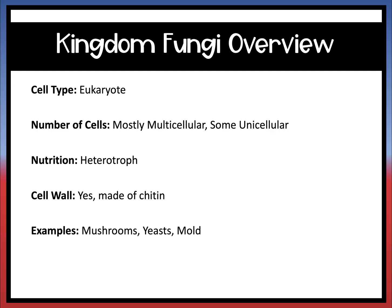For the fungus kingdom, the cell type is eukaryote, which means it has a nucleus. Most fungi are multicellular. There are some unicellular fungi such as yeast. They are heterotrophs, which means they cannot make their own food and must eat other organisms for food.